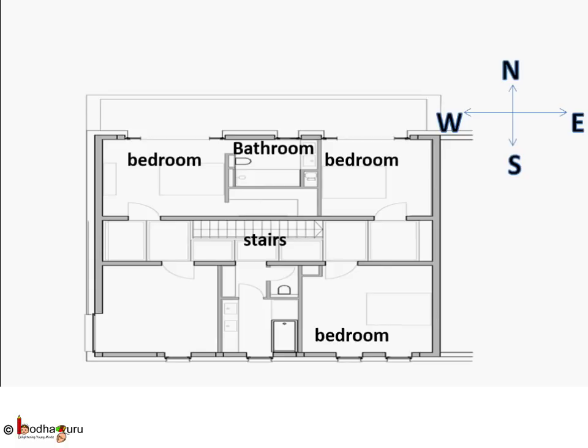We draw maps with the north direction pointing upward. So the main entrance of Aman's house is on north. Now Aman wants to show his room. There is a chair, table, and a bed.